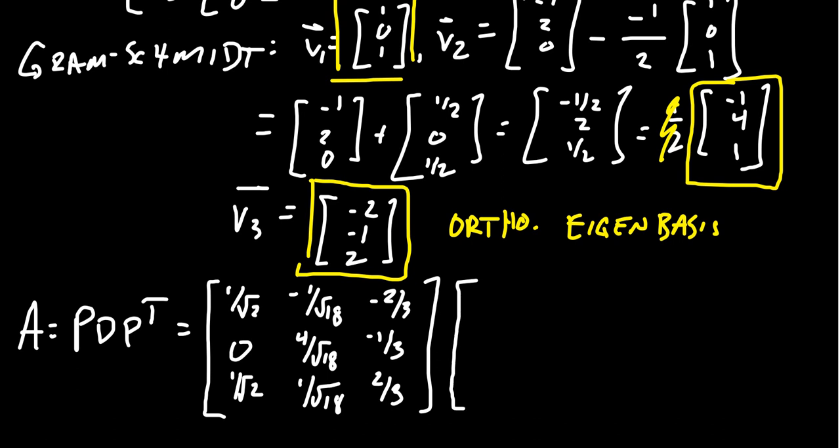The matrix D is going to be the diagonal matrix whose eigenvalues were what we had before. We had the eigenvalues 7, 7, and negative 2. 7 was a repeated eigenvalue. Make sure you put the eigenvalues in the same order as you did the eigenvectors. It doesn't matter which order you use as long as it's the same between them.